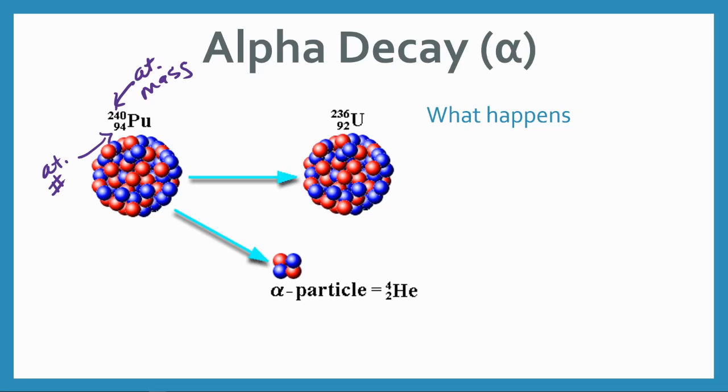So if we're looking at that complete symbol, we're starting out with 94 protons, ending up with only 92. Where those other two protons go, they are right here in the alpha particle.